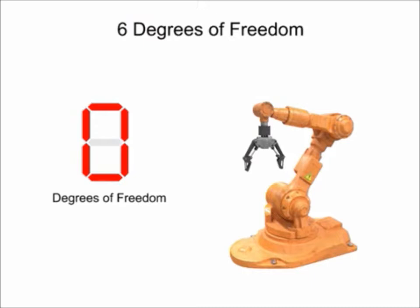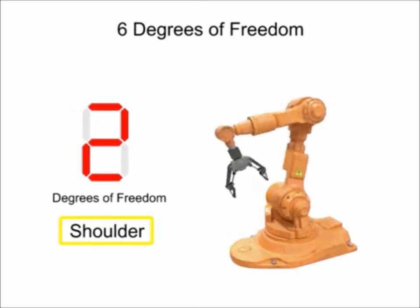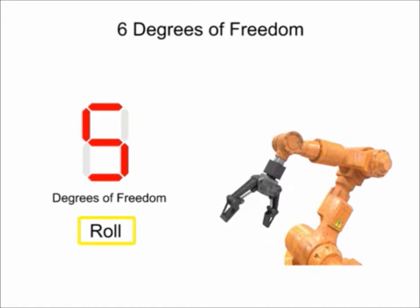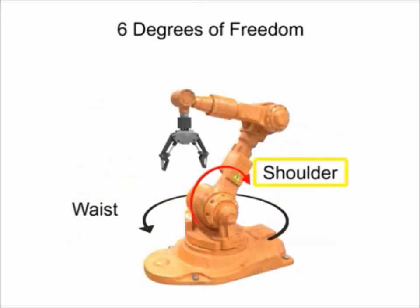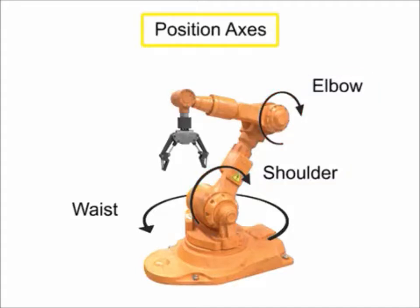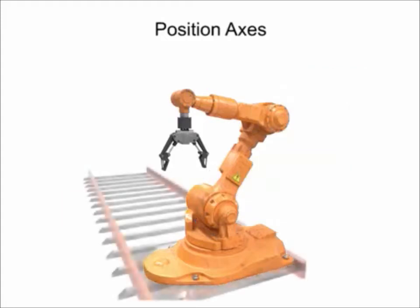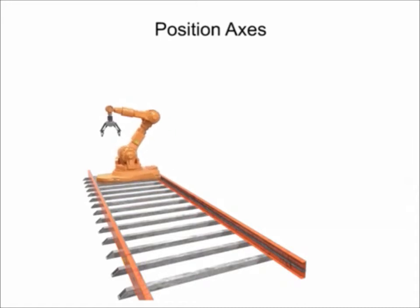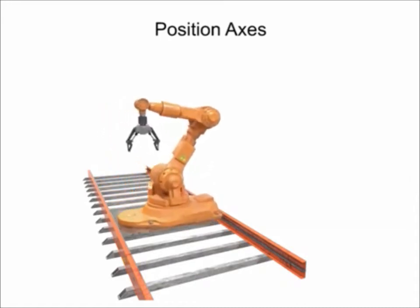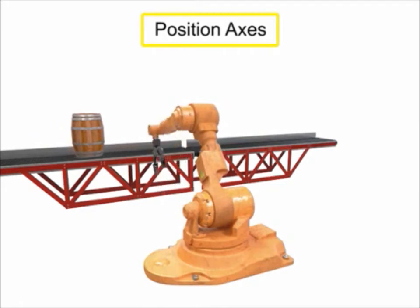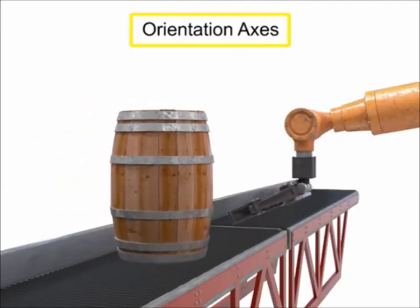It moves along one axis for each of the waist, shoulder and elbow joints, and along three axes at the wrist using pitch, roll and yaw. These particular motions help to locate the tool in the work area and are called position axes. Most robots have at least three position axes to help position the tool in the work area. If the robot were to slide along a track, it would have a fourth position axis of linear movement and another degree of freedom.